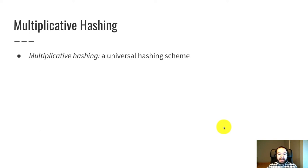So multiplicative hashing is one particular universal hashing scheme. It's not the only one. There are others. And multiplicative hashing is based on a couple ideas. It's based on a linear function like y equals mx plus b.